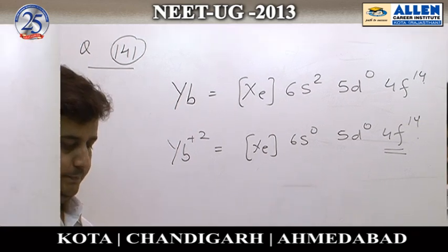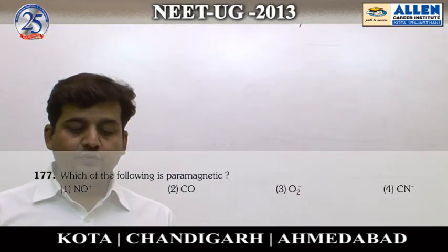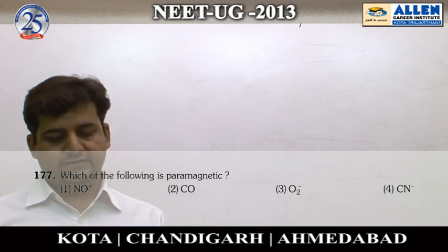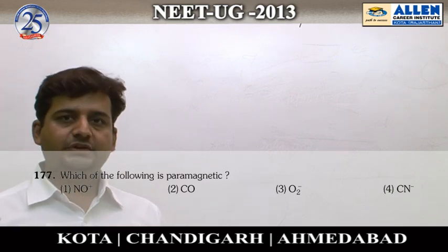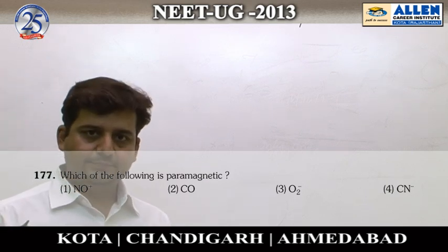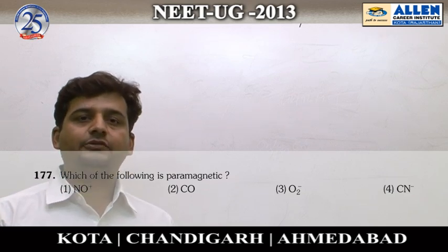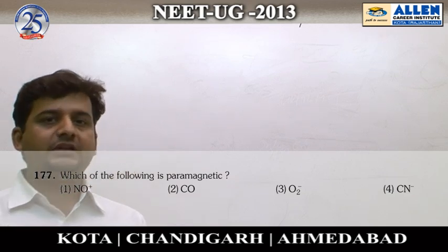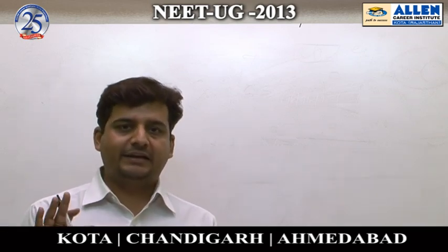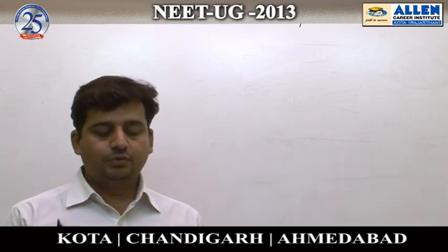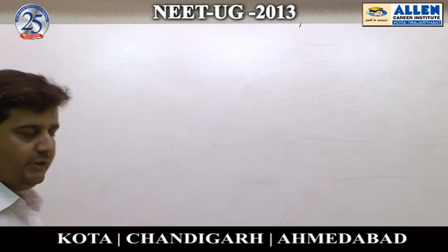Next, question number 177: which of the following is paramagnetic? This is a straightforward question. We can solve it by two methods — either by counting the total number of electrons (if the total is odd, it is paramagnetic), or by writing the electronic configuration using molecular orbital theory.